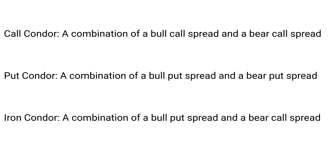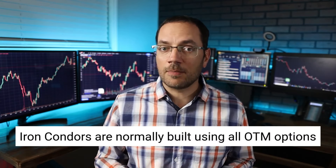Theoretically, there should be no difference between any of these condors. Condors built using identical strikes with identical expiration should have an identical risk-to-reward ratio, the same break-even, and the same Greek profile. In the real world though, out-of-the-money options usually have more liquidity than in-the-money options and a narrower spread between the bid and ask prices. For this reason, most retail traders use the iron condor as it uses entirely out-of-the-money options.